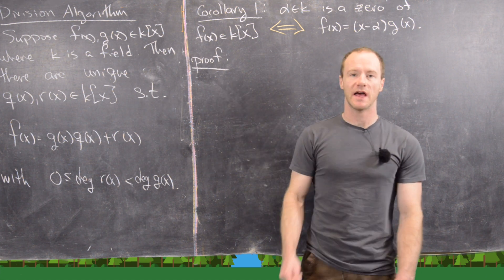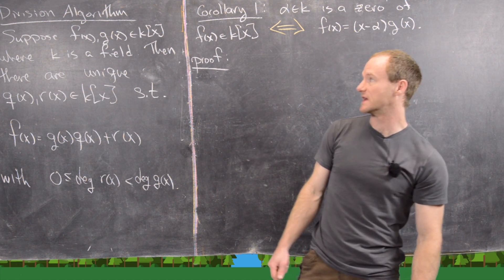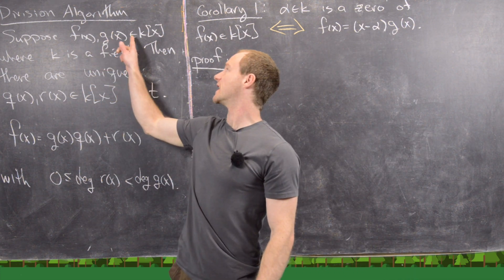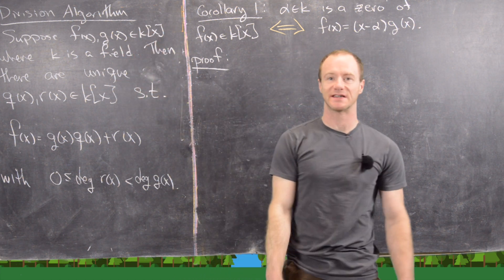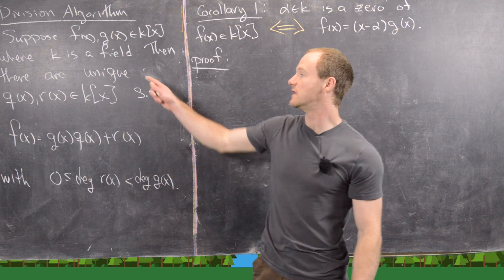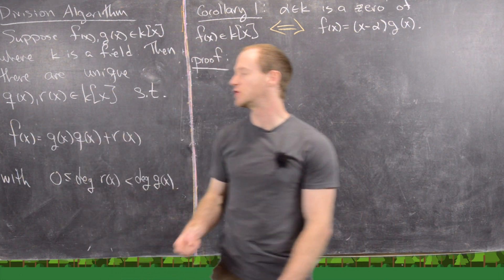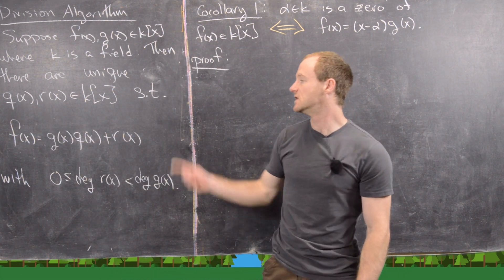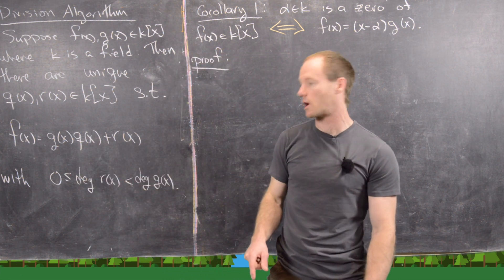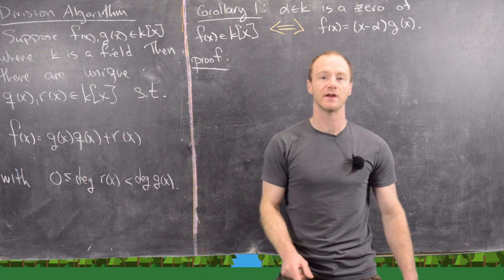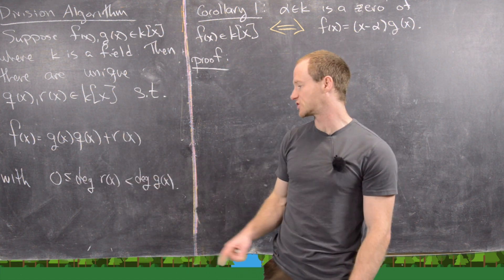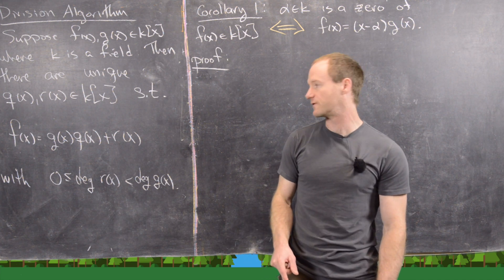Let's recall what the division algorithm says. Suppose that k is a field and f(x) and g(x) are polynomials in k[x] — polynomials whose coefficients are in k. Then there are unique polynomials q(x) and r(x) so that we can write f(x) = g(x)·q(x) + r(x), where the degree of r(x) is greater than or equal to zero and strictly less than the degree of g(x).